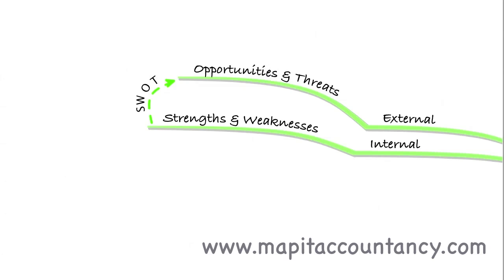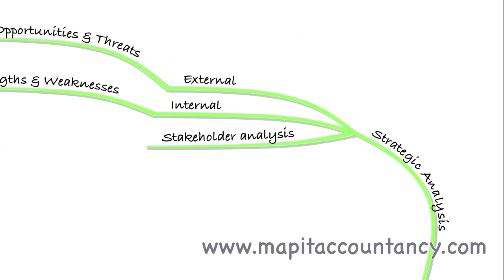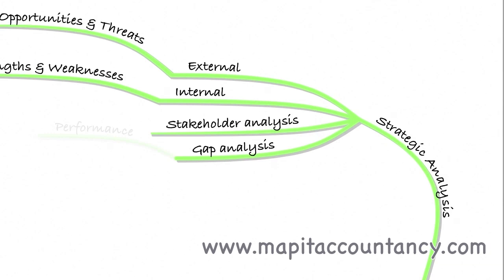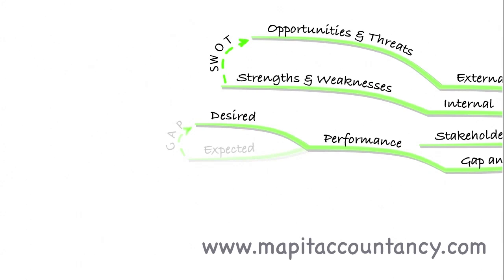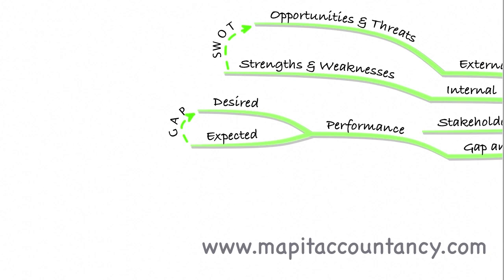We need to undertake an analysis to evaluate where we are — that's the first step in setting a strategy: strategic analysis. We also need to understand who our stakeholders are: those with a legitimate interest in the business whom we need to keep happy. We'll also conduct a gap analysis, looking at desired performance compared to expected performance. If there's a gap between the two, we need to try to close it, but at this stage we're only trying to identify whether a gap exists.